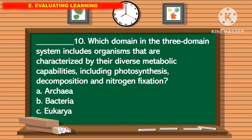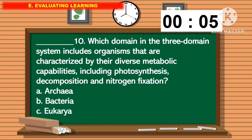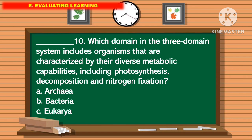For question number 10: which domain in the 3 domain system includes organisms that are characterized by their diverse metabolic capabilities including photosynthesis, decomposition, and nitrogen fixation? The correct answer is letter B.